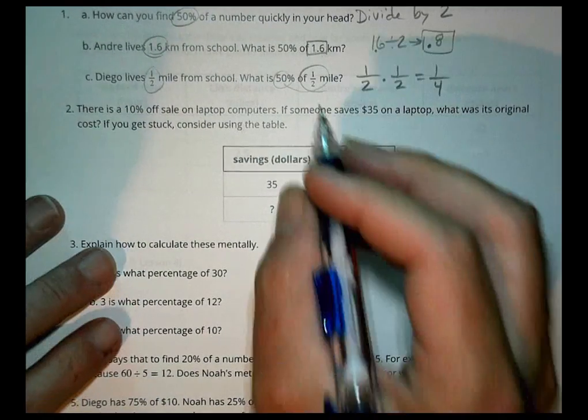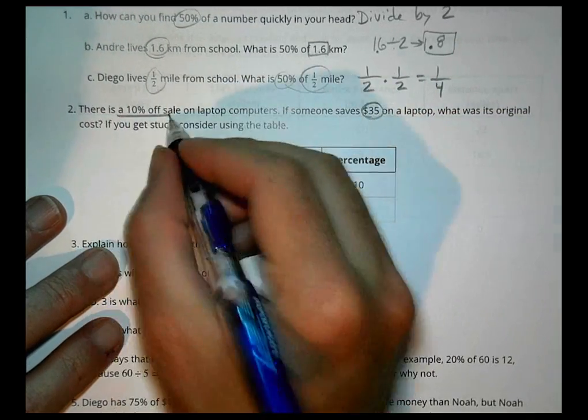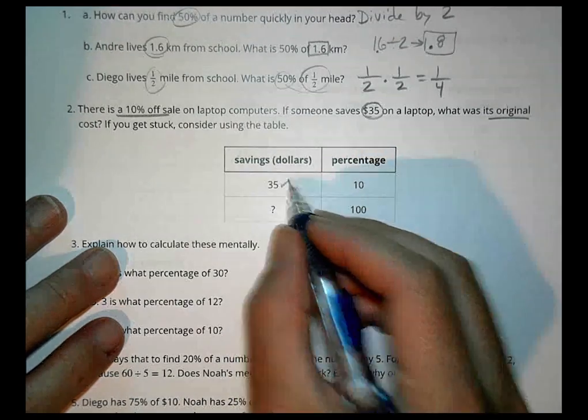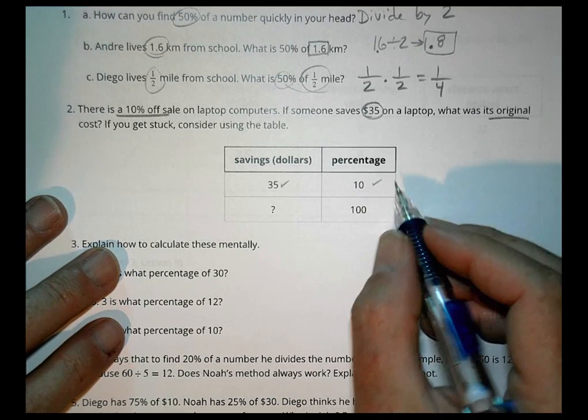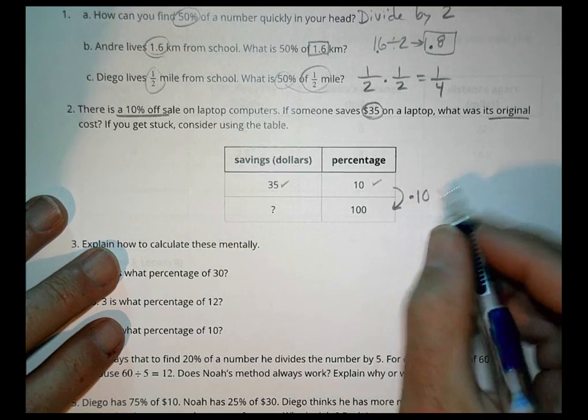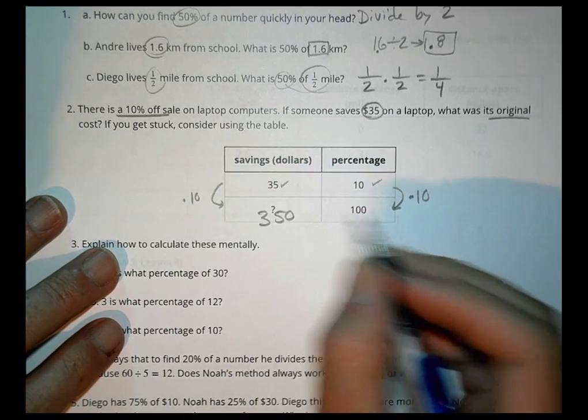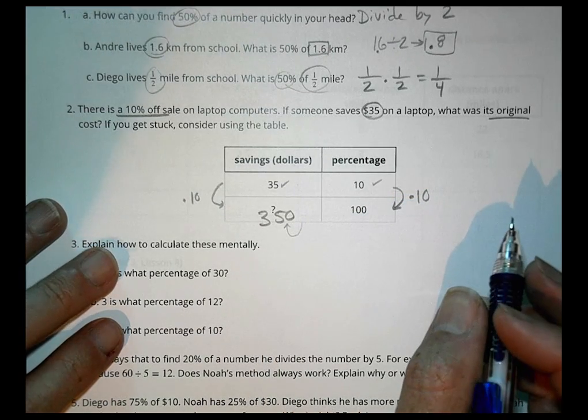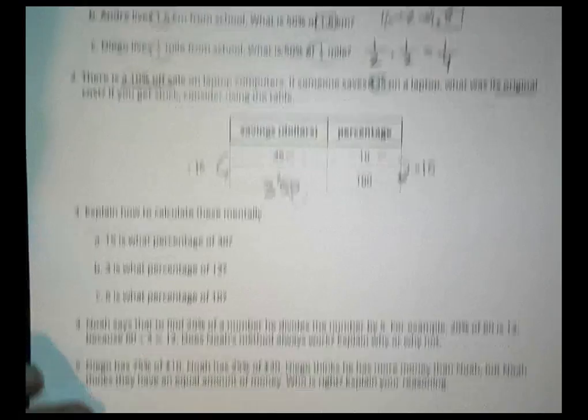Number 2. It says there's a 10% off sale on laptop computers. If someone saves $35 on a laptop, what was the original price? It saved $35 and $35 was 10%. So the question is what is 100%? We consider here to go from 10 to 100 is multiplying by 10. So 35 times 10 is 350. And we can see that 10% is moving the decimal over one spot and there's your $35 savings. So the original price was $350.